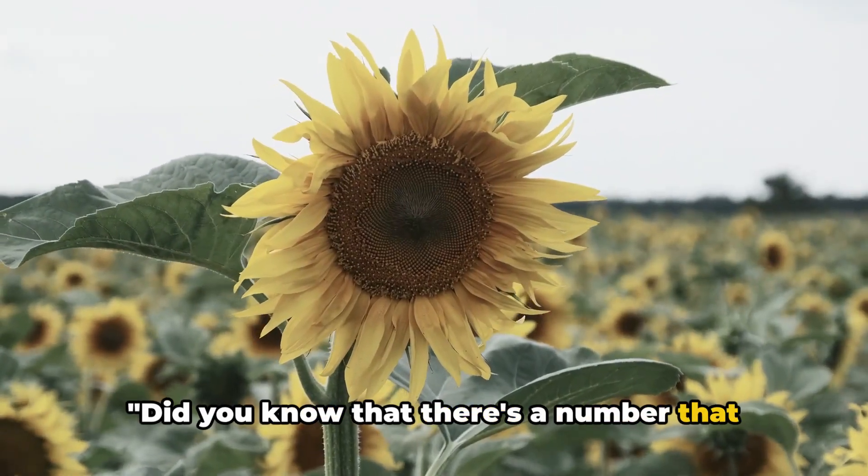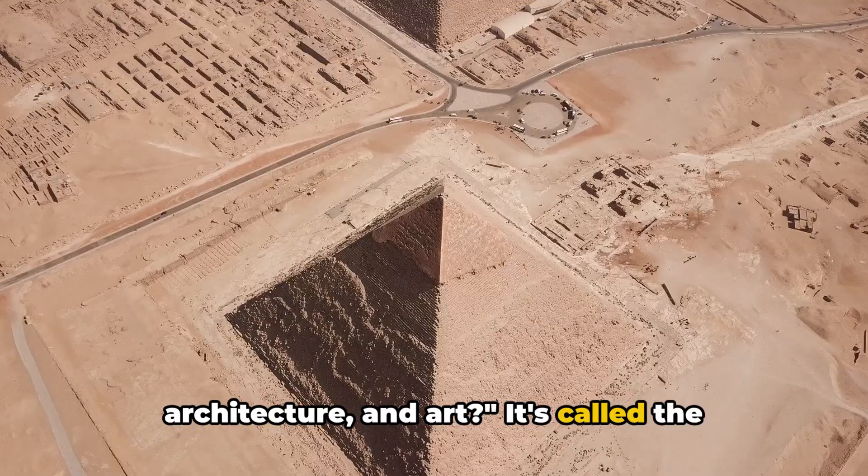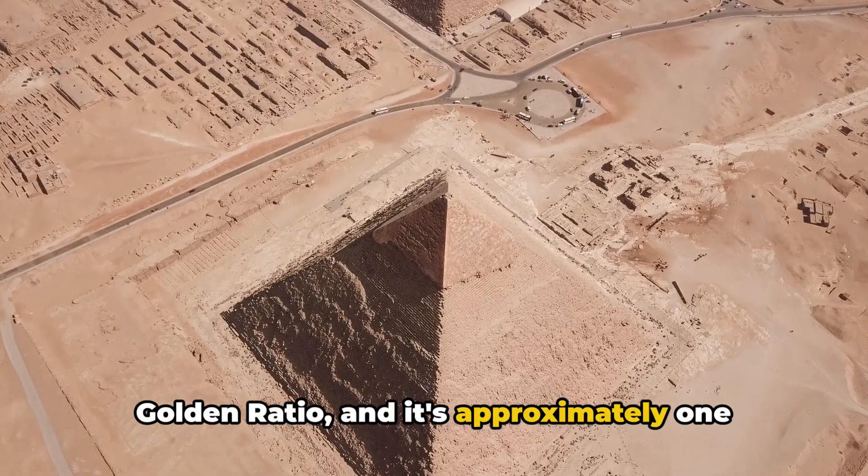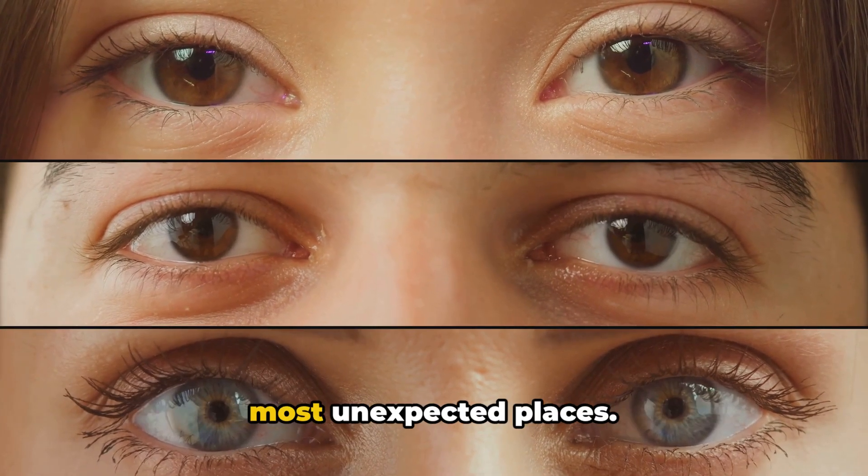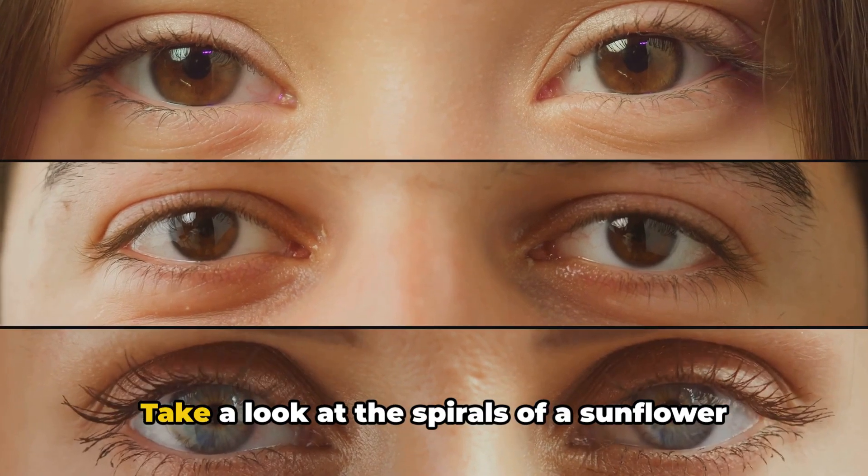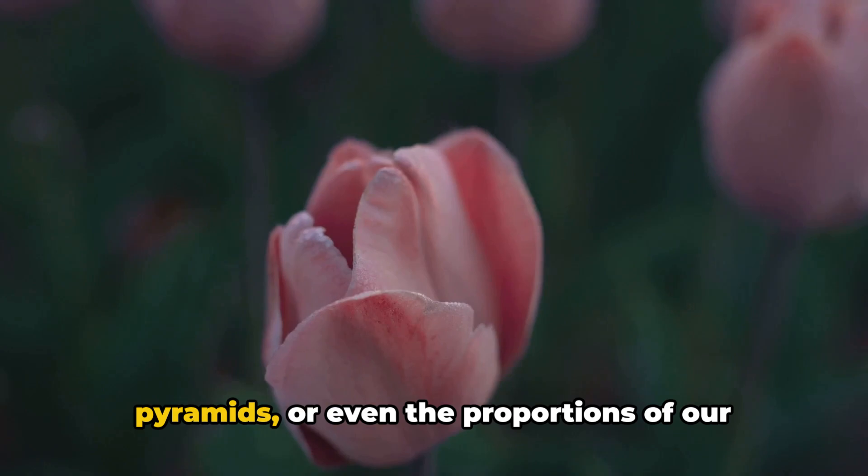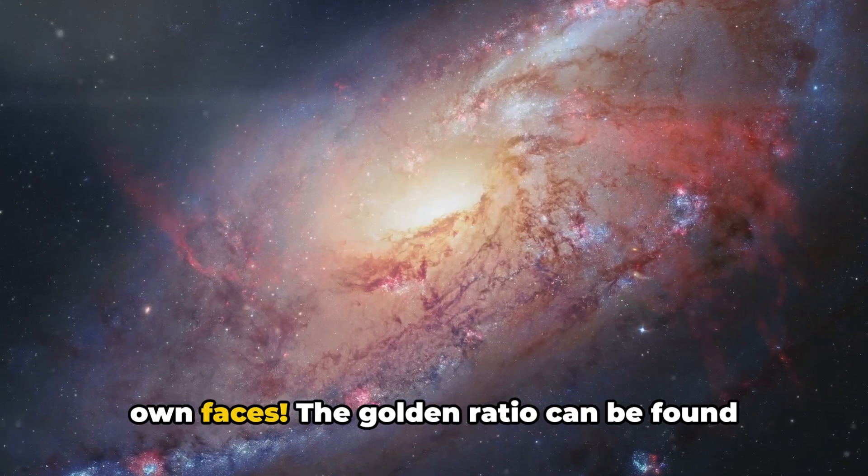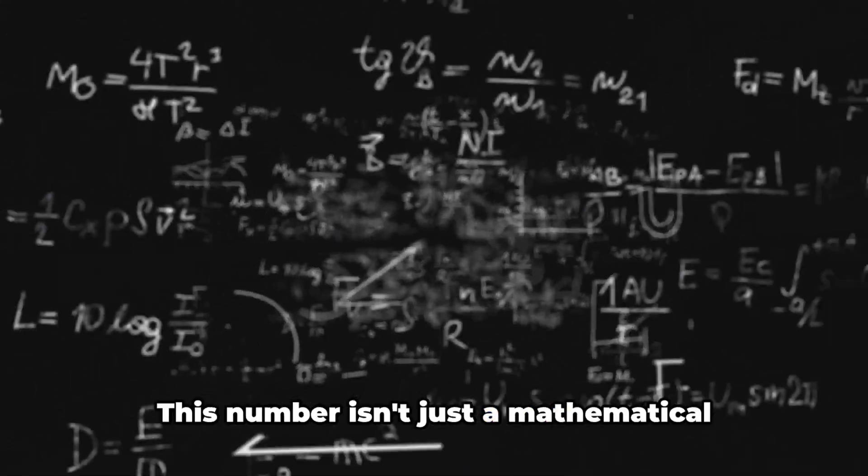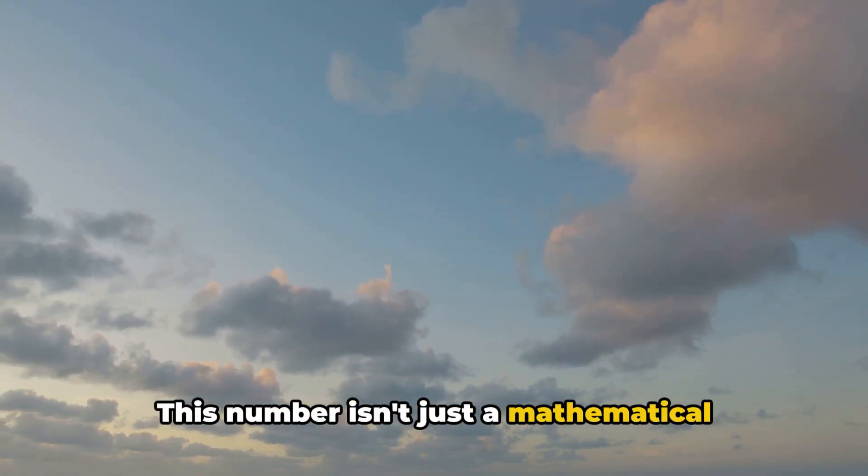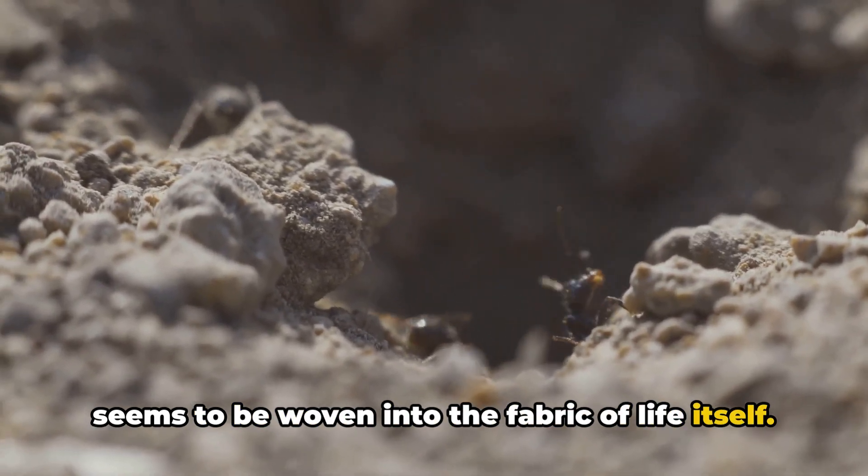Did you know that there's a number that pops up everywhere in nature, architecture, and art? It's called the golden ratio, and it's approximately 1.618. This fascinating number shows up in the most unexpected places. Take a look at the spirals of a sunflower, a pineapple, the layout of the pyramids, or even the proportions of our own faces. The golden ratio can be found in all of these and more. This number isn't just a mathematical concept, it's a universal pattern that seems to be woven into the fabric of life itself.